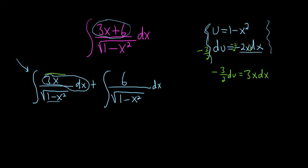So now this piece here, the 3x dx, that's going to be your negative 3 halves and then you have du and then the bottom is just the square root of u. So that part's okay. Plus.